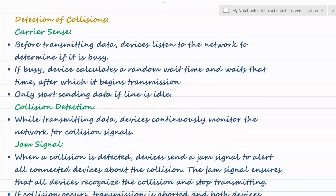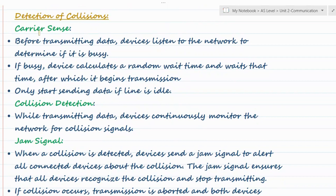Let's understand CSMA/CD first — collision detection. What happens in this process? Carrier Sense: before transmitting data, devices listen to the network to check if the line is busy or free. If it is busy, the device waits for a random amount of time, then senses the line again, and only starts sending if the line is idle. In case the line is busy, they wait for a random amount of time.